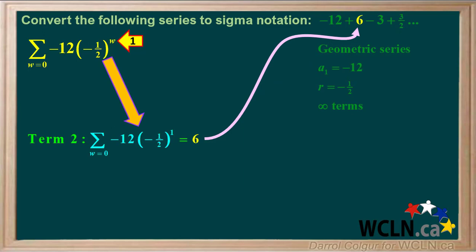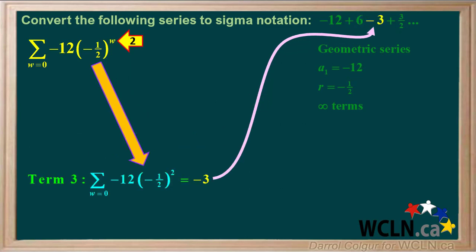For term 2, we'll put in 1 for w. Negative one half to the power of 1 equals negative one half, and negative 12 times negative one half is equal to positive 6, which is the correct value for term 2. For term 3, we'll put in 2 for w. Negative one half to the power of 2 equals positive one quarter, and negative 12 times positive one quarter is equal to negative 3, the correct value for term 3.